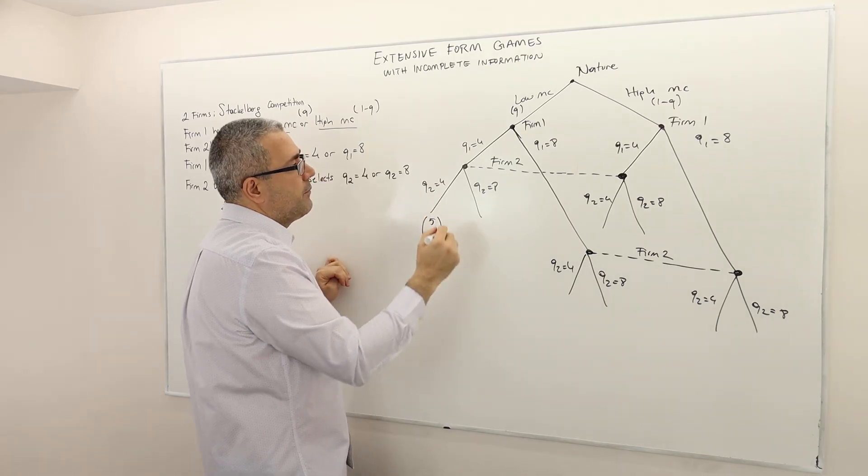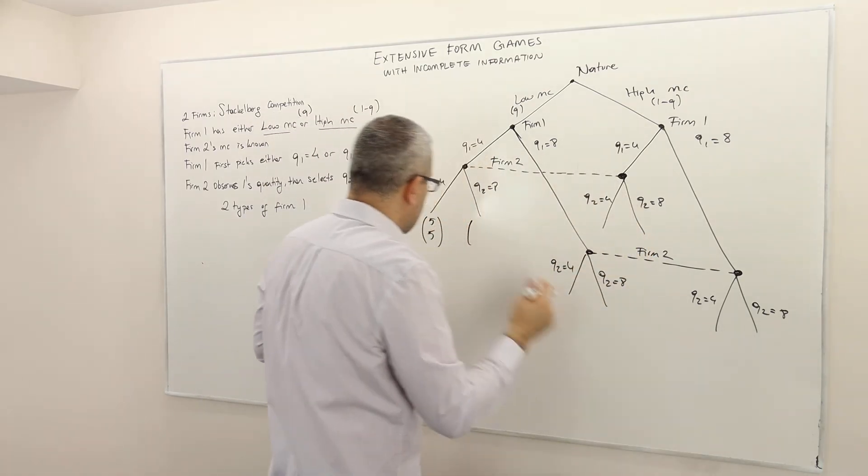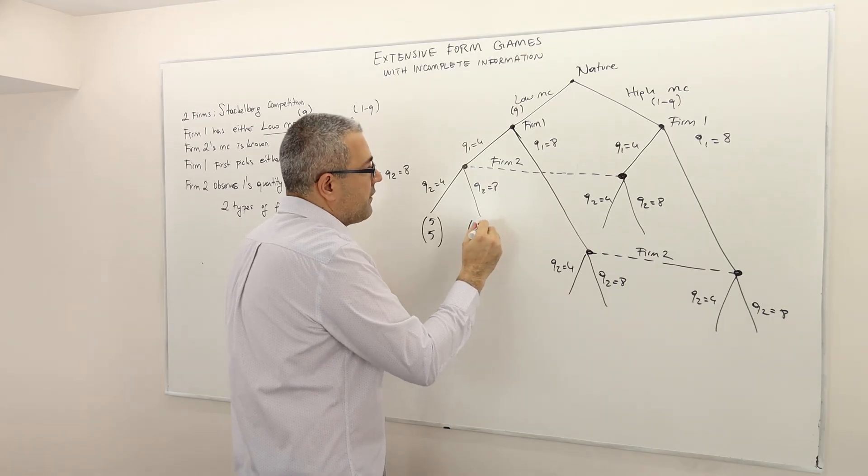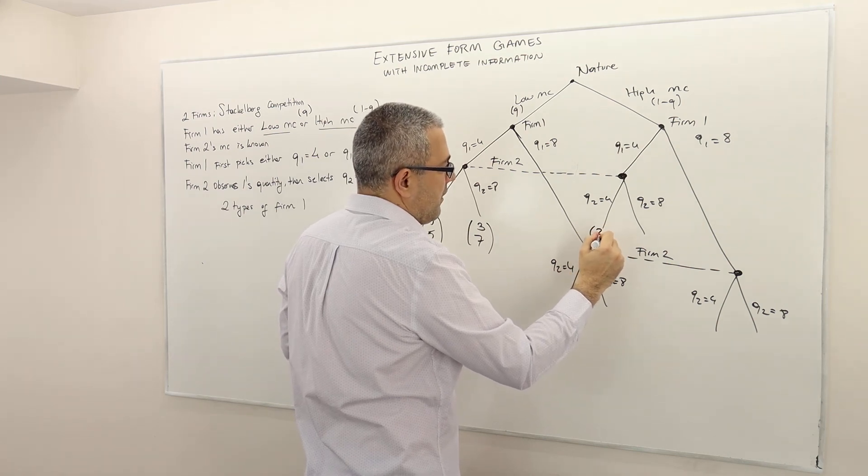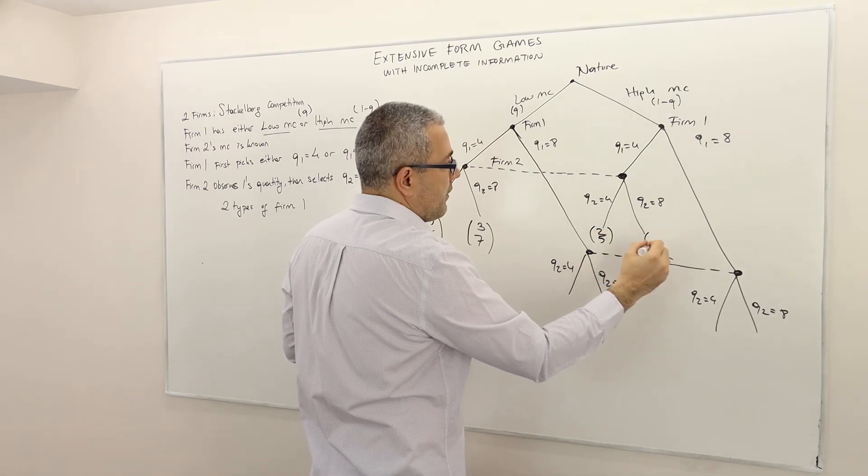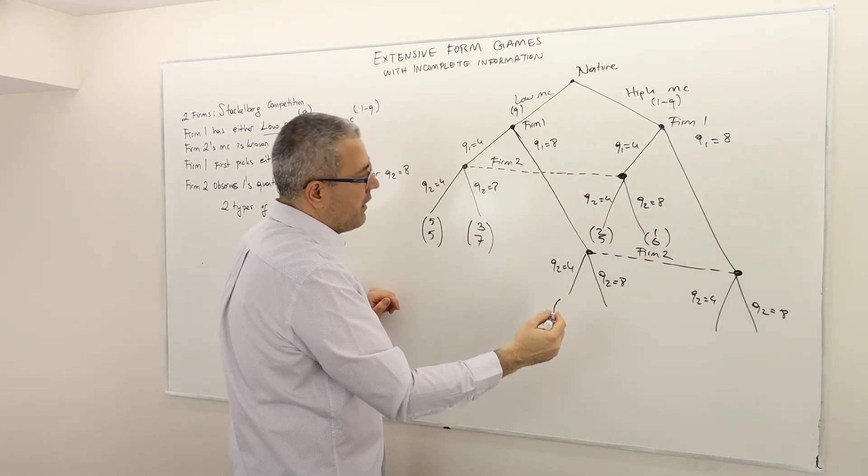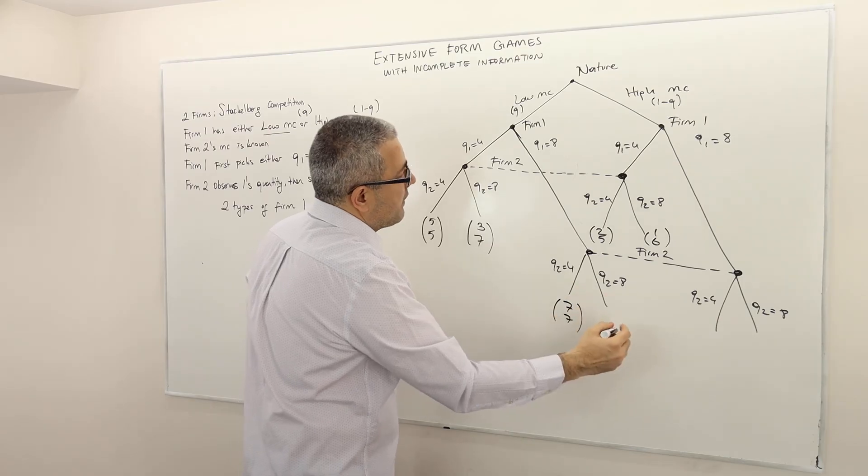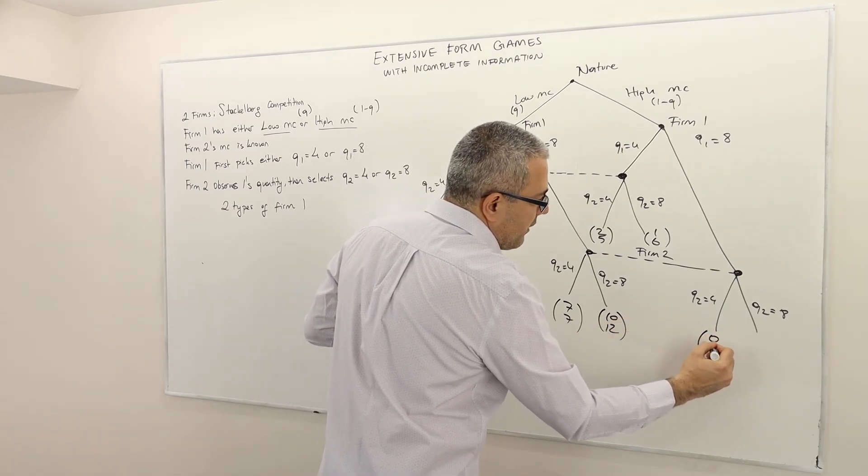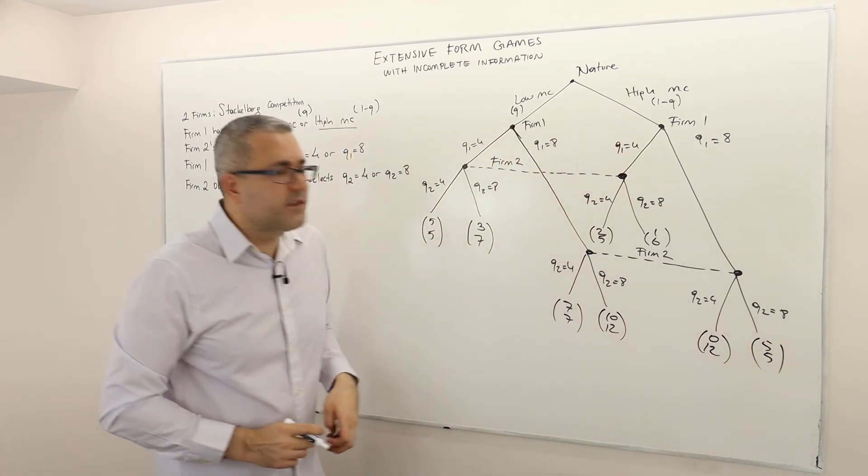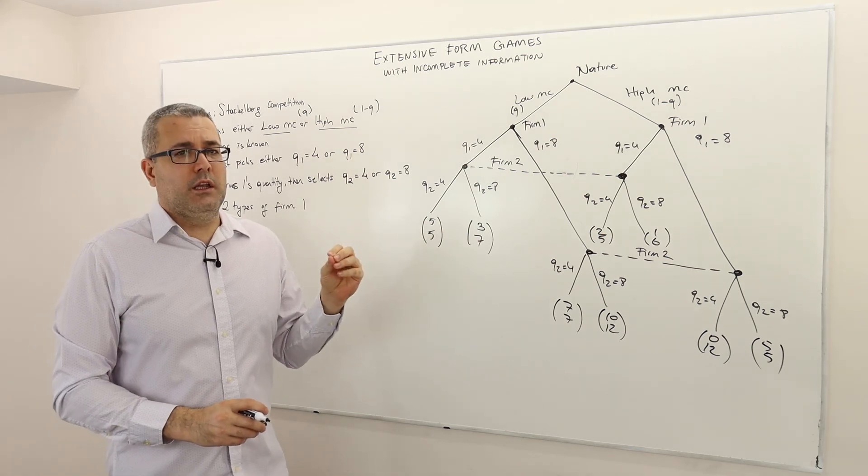So 5, 5 let's suppose. And 3, 7, so here I'm going to have 2, 5. And then I have here 1, 6. And then here I will have 7, 7. Here I'm going to have, again, I'm just making up the numbers, they do not really have to be consistent with the story. So just to show the complete picture. So this is what the game tree is going to look like in this game.